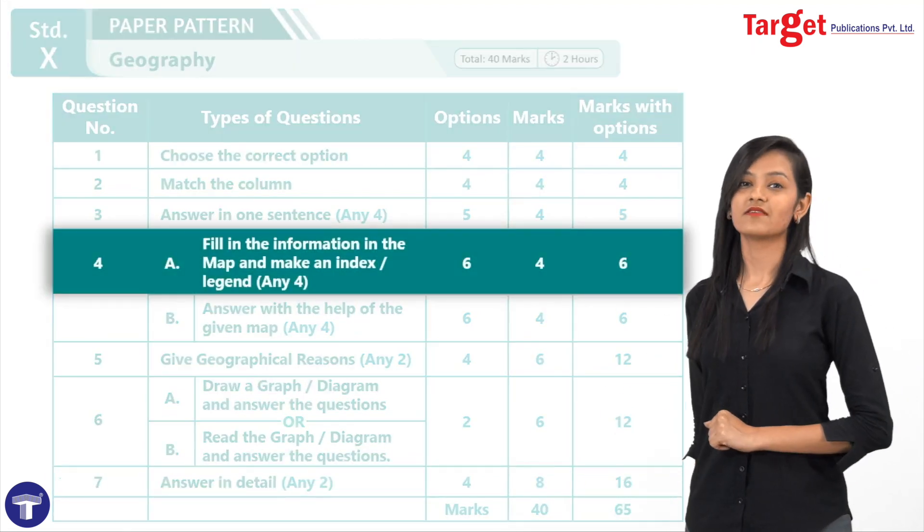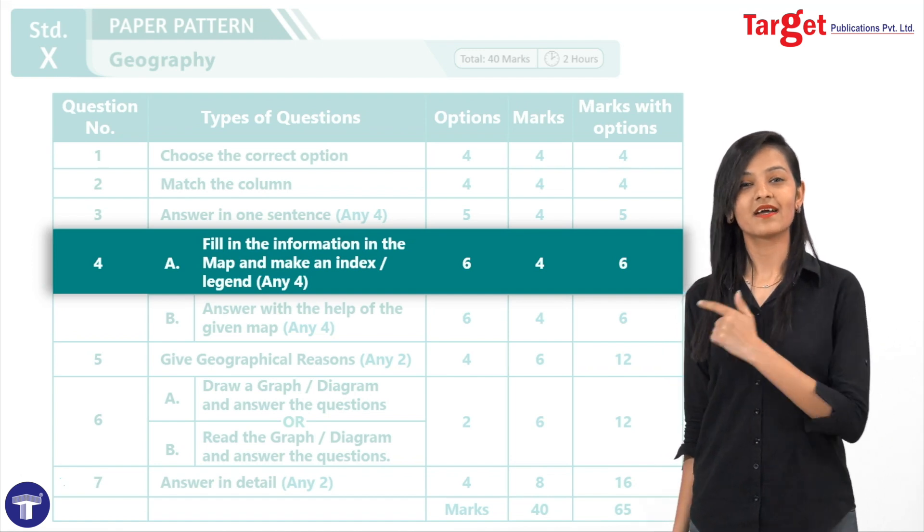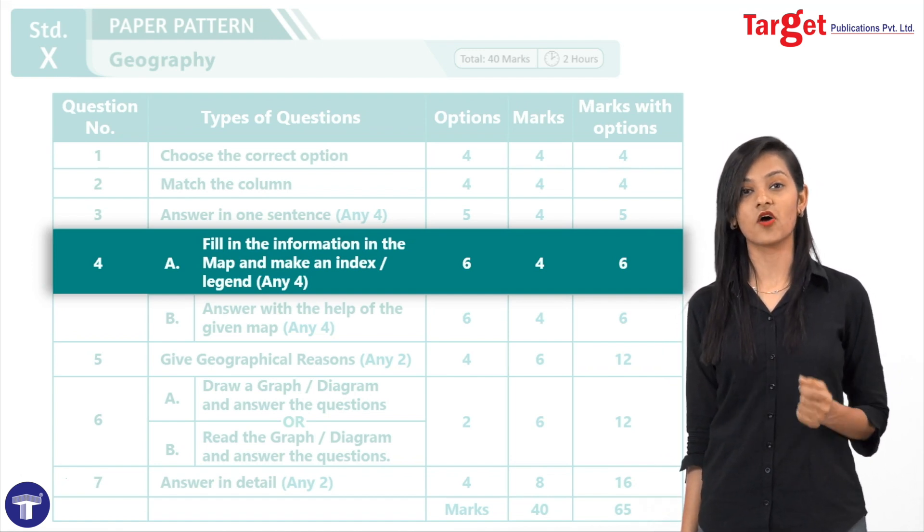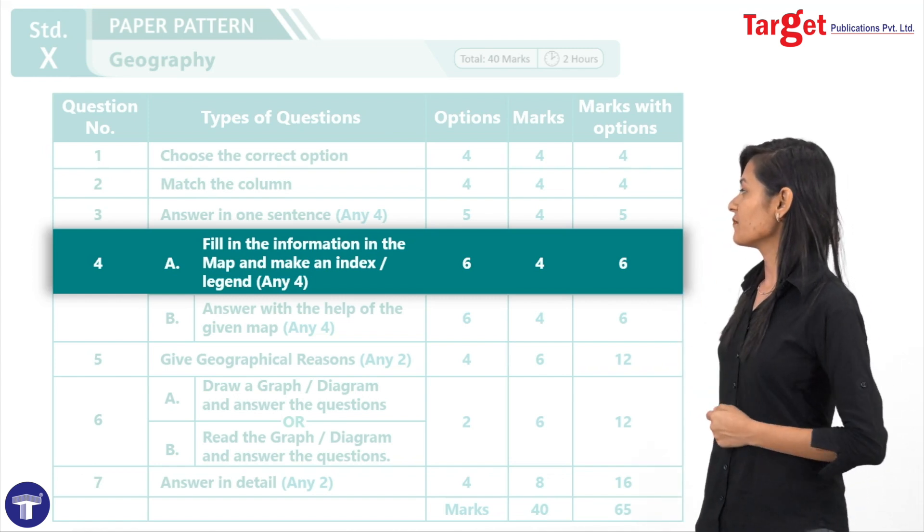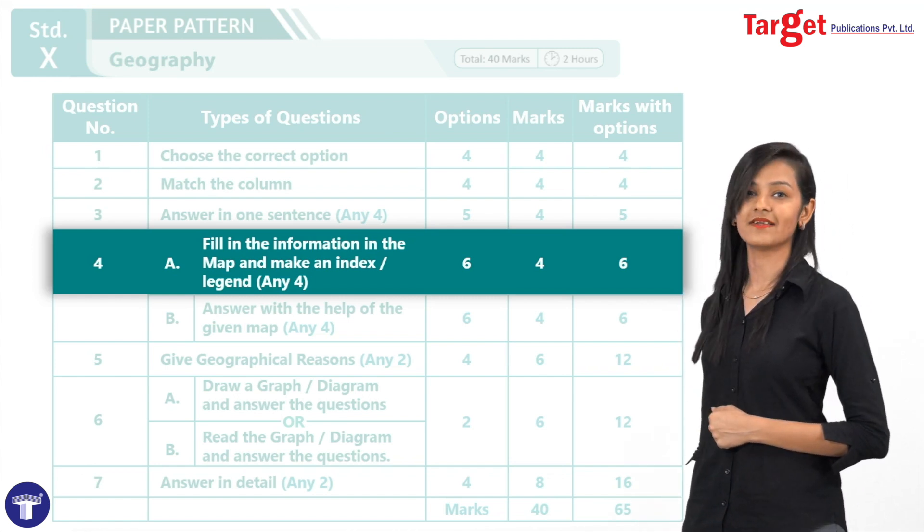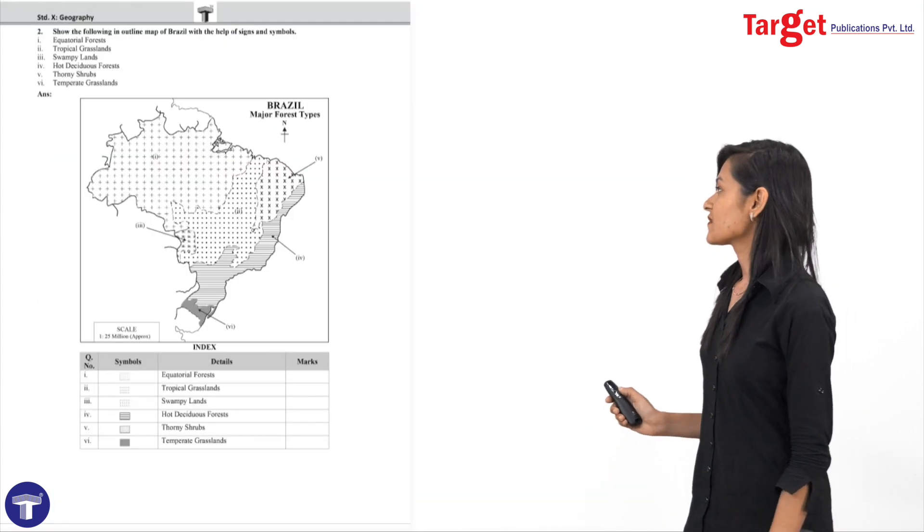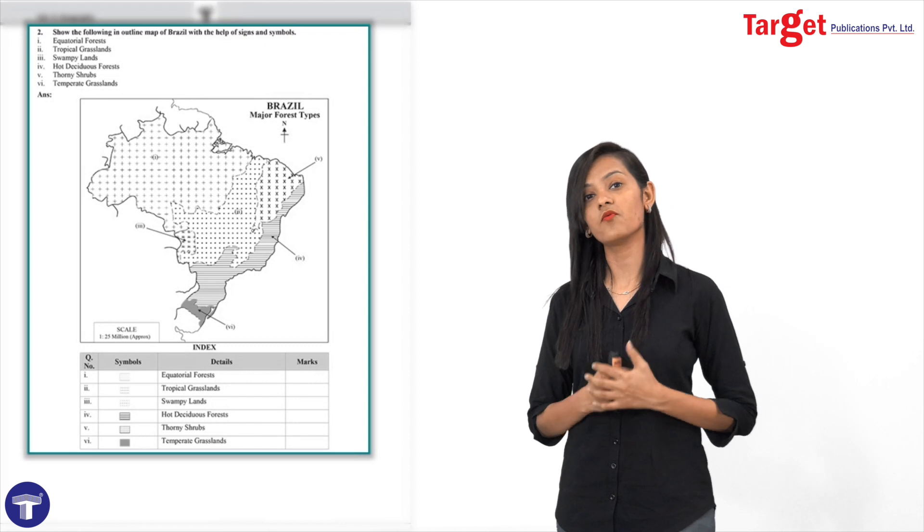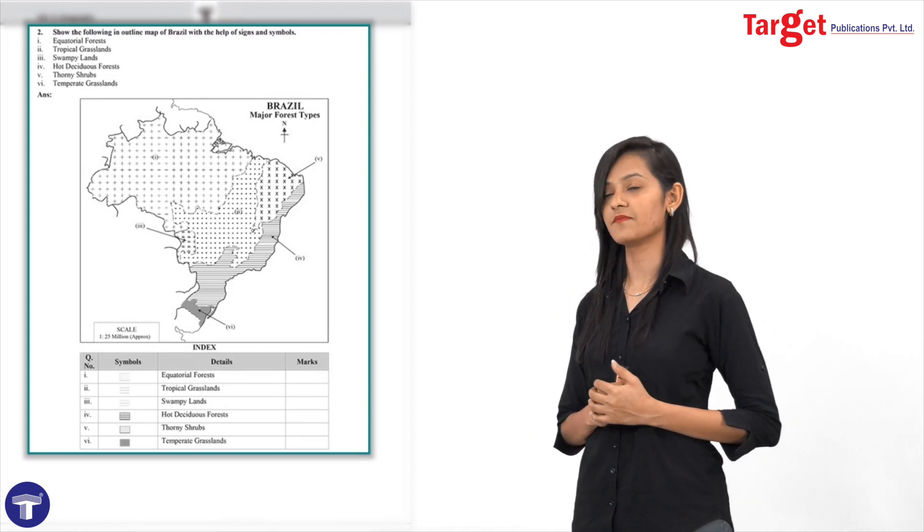Let us observe, the little bit of the tricky part comes in question number four A. This question is based on plotting on the map, which is fill in the information in the map and make an index or a legend. Now here students, how we expect or how we can help you here with some tips is, you will be given this kind of map on a separate sheet of paper.